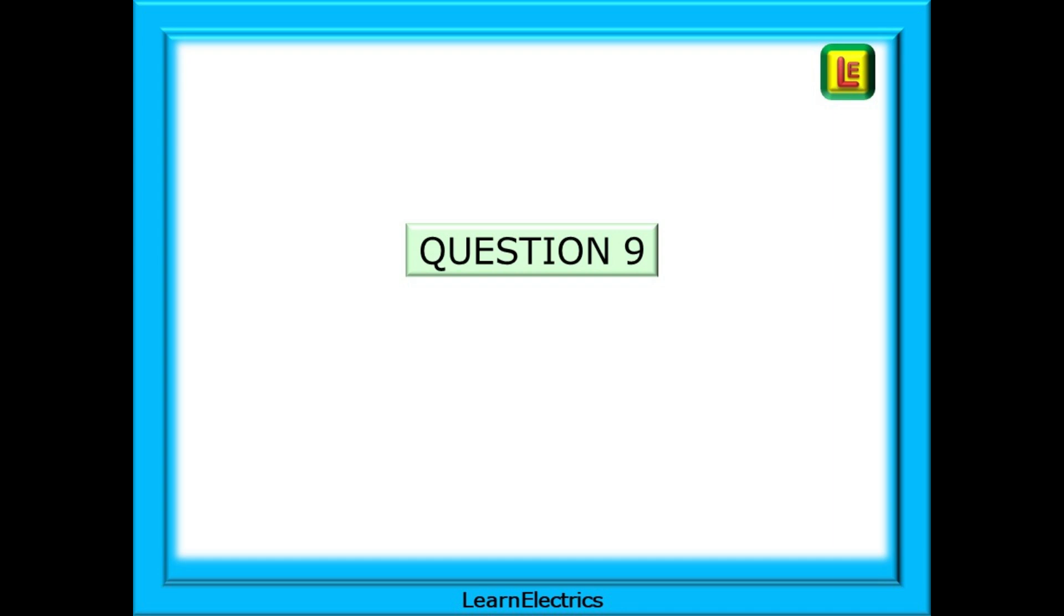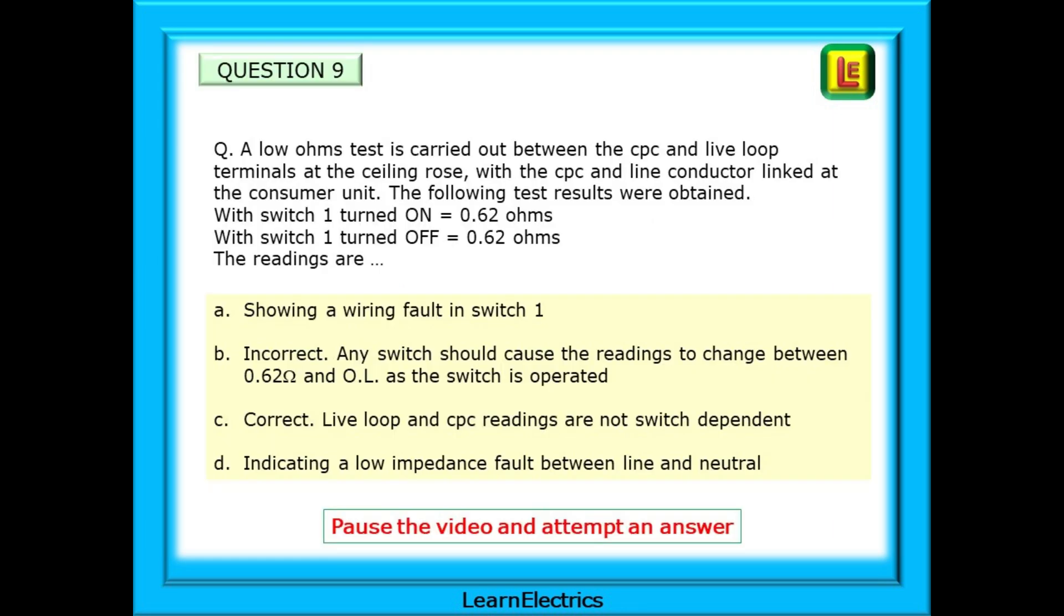Now we can look at question number 9. The question tells us that a low ohms test is carried out between the CPC and the live loop terminals at the ceiling rose with the CPC and line conductor linked at the consumer unit. The following test results were obtained. With switch one turned on, we had 0.62 ohms. With switch one turned off, we also have 0.62 ohms. Again, follow any sketches that you may have made. If you can trace the wiring through from the live loop terminal, all the way through the circuit, and back to the earth terminal, you may find this helps to answer this question.